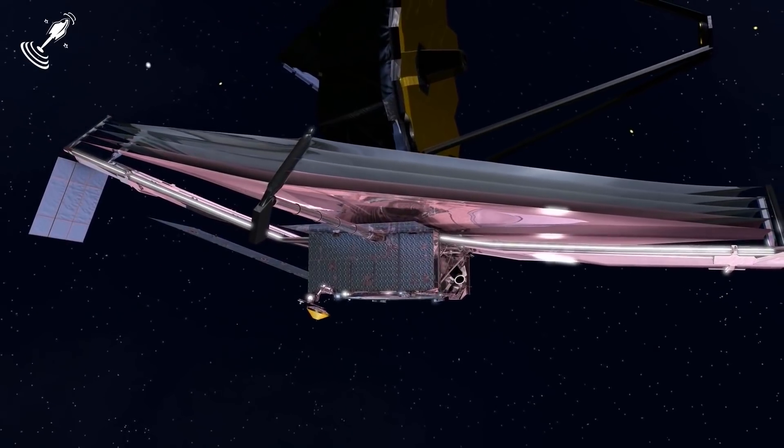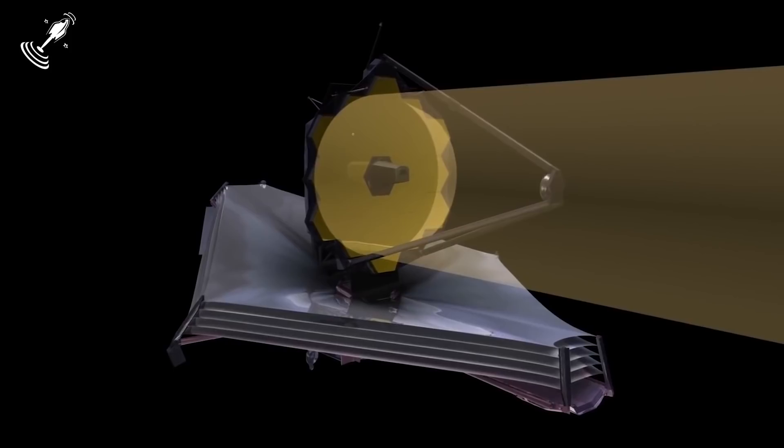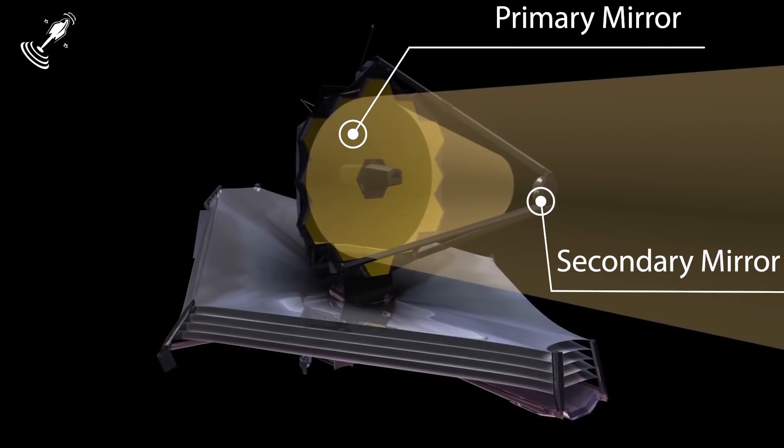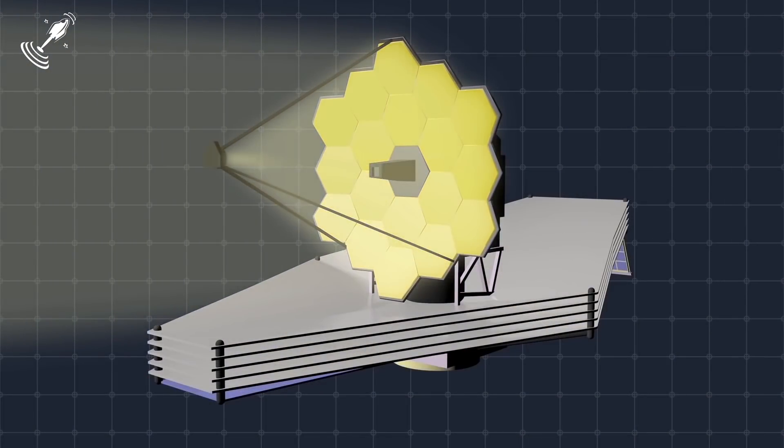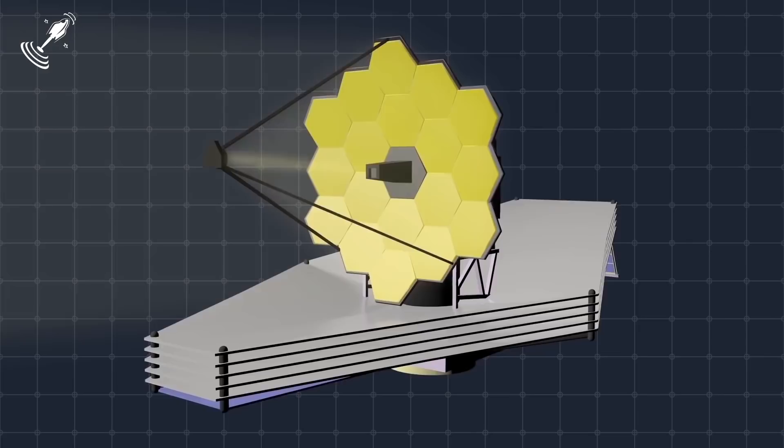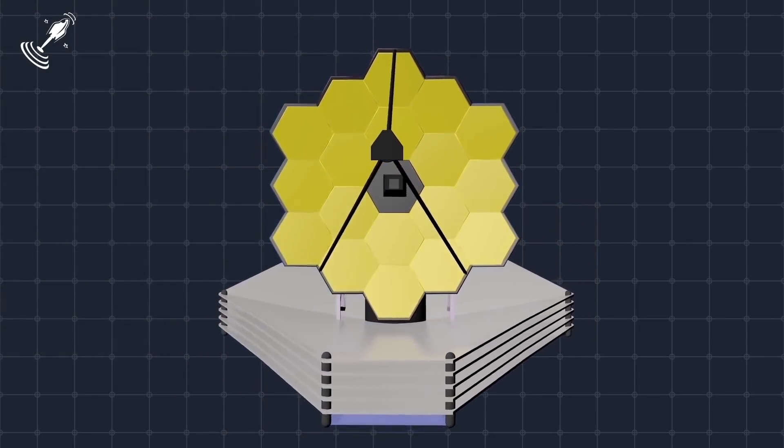Once the primary mirror alignment is complete and set up, the alignment of the primary mirror with the secondary mirror will begin. It is the secondary mirror that is the second surface where the photons will hit on the way into the four science instruments of the observatory.